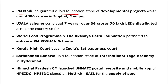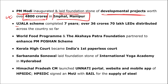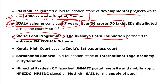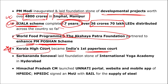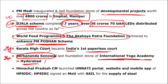Prime Minister Narendra Modi inaugurated and laid the foundation of development projects worth 4,800 crore rupees. The UJALA scheme completed seven years and over 36 crore 70 lakh LEDs were distributed across the country. The World Food Programme and Akshaya Patra Foundation partnered to enhance the PM Poshan scheme. Kerala High Court became India's first paperless court.